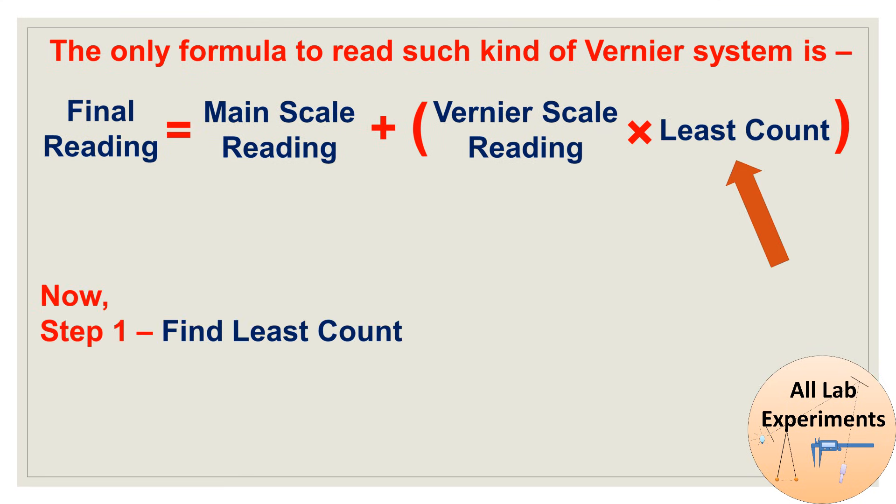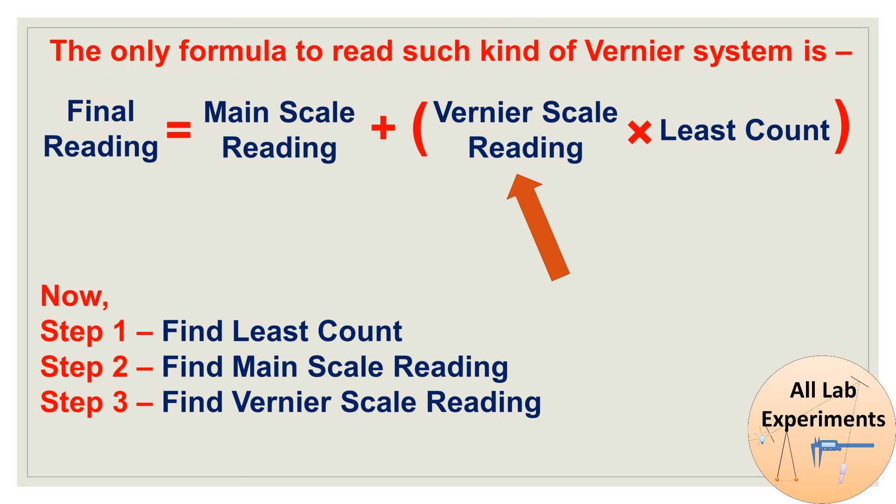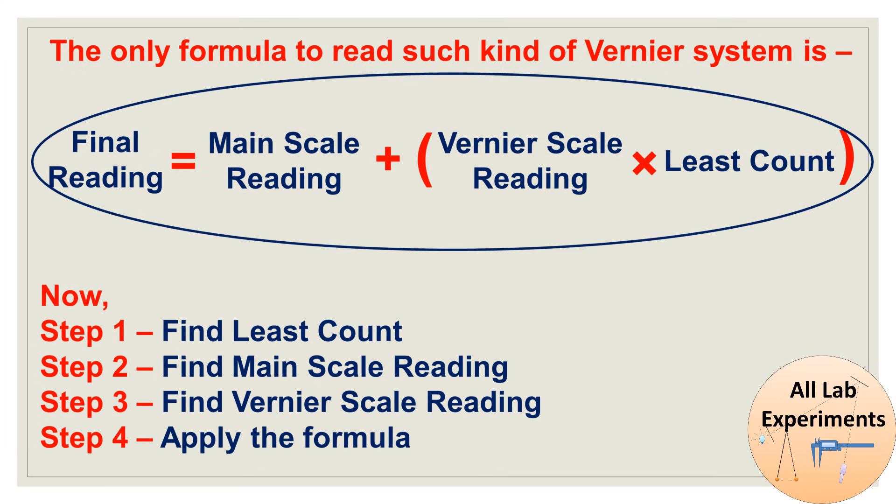Step 1: find the least count of the system. Step 2: find the main scale reading. Step 3: find vernier scale reading. And step 4: apply the formula. That's it. So in this way you can read any measurement on this scale. Let's start with step 1.